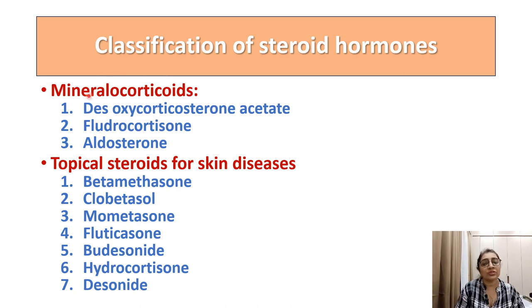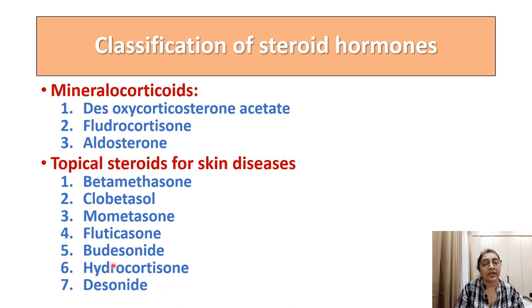Mineralocorticoids include deoxycorticosterone acetate (DOCA), fludrocortisone, and aldosterone. Topical steroids for skin diseases include betamethasone, fluticasone, budesonide, hydrocortisone, and desonide. These are all topical steroids for skin diseases.